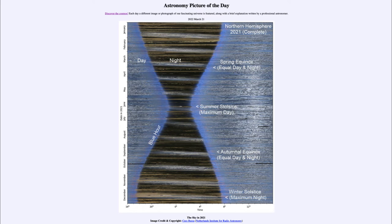When we look at this image, we can also see where the equinoxes and solstices are. You can see the spring equinox, when day and night are equal, up towards the top middle of the image.